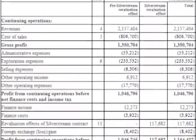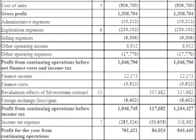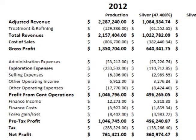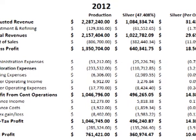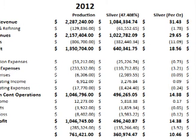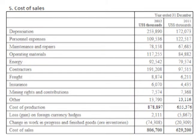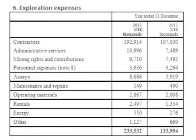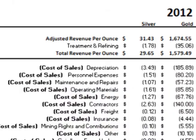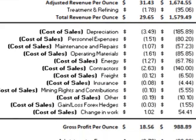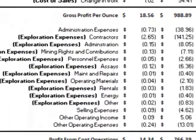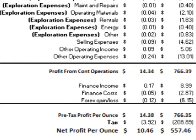I took the consolidated income statement from the 2012 annual report and broke each cost down by metal. For silver and gold I then divided each cost by the number of ounces produced to get a cost per ounce breakdown. I don't discuss the numbers for gold in this video, but they could be viewed along with the 2011 numbers for gold and silver on the spreadsheet. In separate sections, the annual report also breaks down the cost of sales and the exploration expenses from the consolidated income statement into specific costs. For those sections I also broke down the cost per ounce for gold and silver.